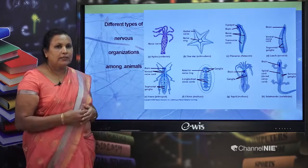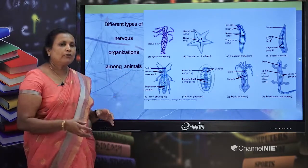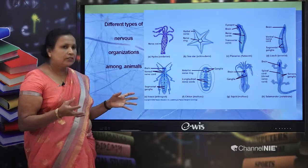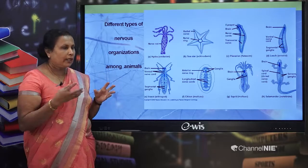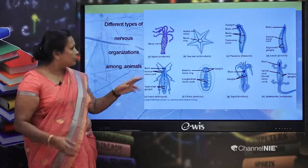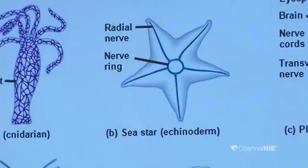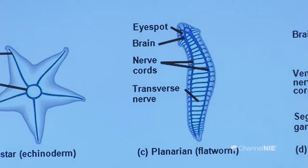Echinoderms, such as sea stars, also emerged during the Cambrian explosion. They have special kinds of nerves which run along the length of their arms and are connected to a middle nerve ring. They show a kind of centralization, with their bilateral symmetrical and elongated body plan.